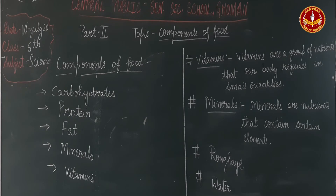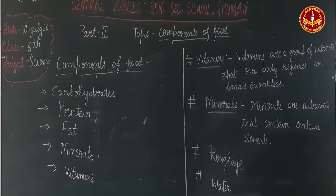Vitamin K is found in green vegetables like spinach and soy bean. It is important for the clotting of blood.